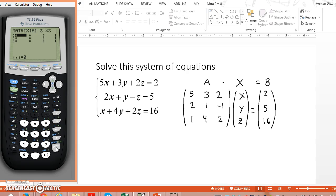Now you're going to input the numbers. 5 for the first entry, 3, and then you have 2, then 2, 1, negative 1.